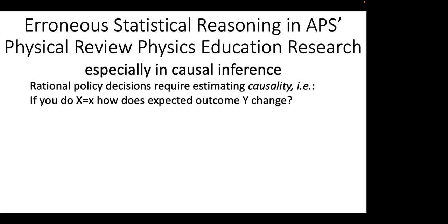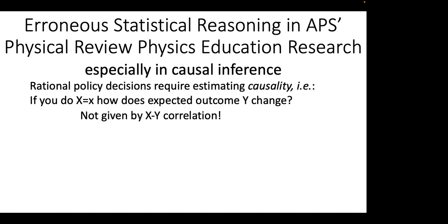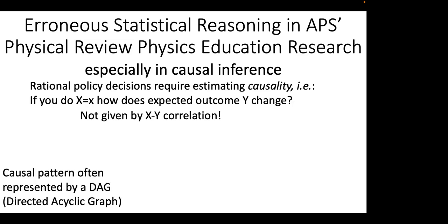So what is causal inference? Physics education research, like many other social sciences, is aimed at helping you decide what to do to get outcomes that you want — that's how you make rational policy decisions. By definition, causality means: if you do X, how will that change some expected outcome Y that you care about? It's well known that you can't just look at the correlation between X and Y and infer that the causal effect of changing X corresponds to that correlation. Correlation is not causation. Instead, one can often represent a causal pattern by a directed acyclic graph, called the DAG.